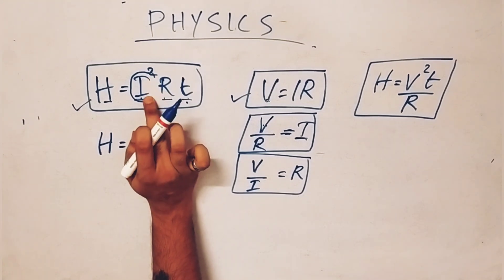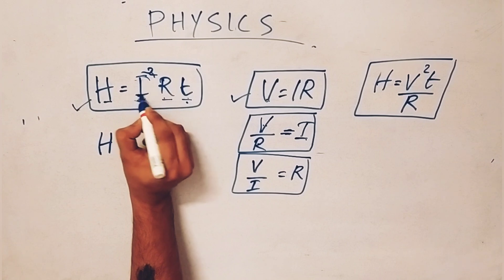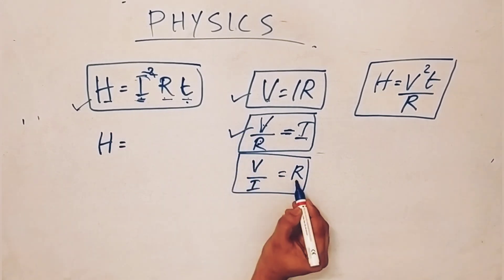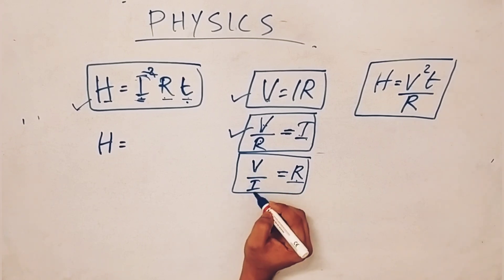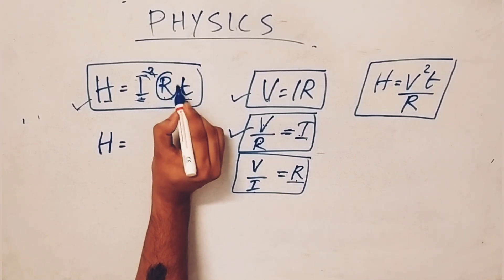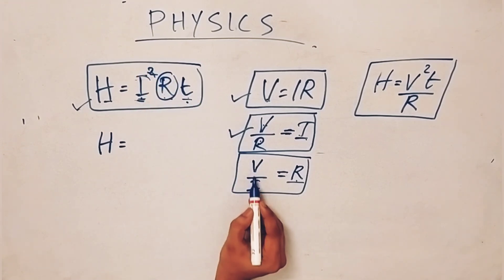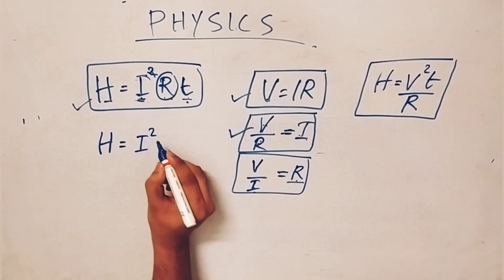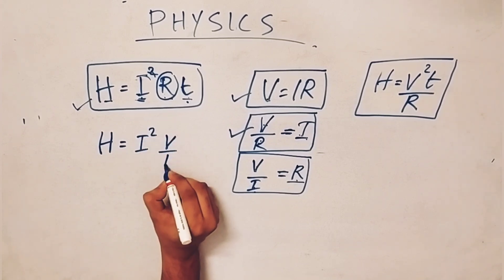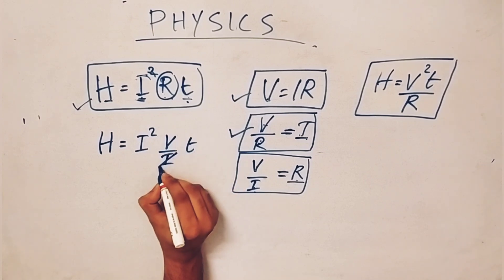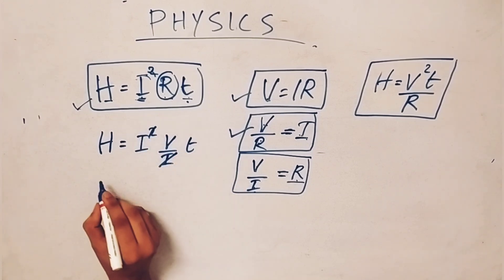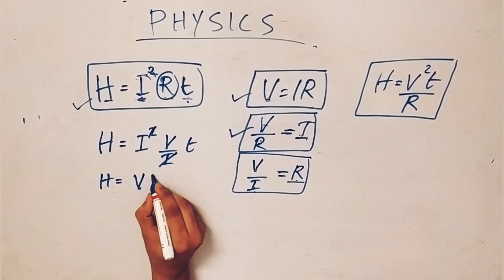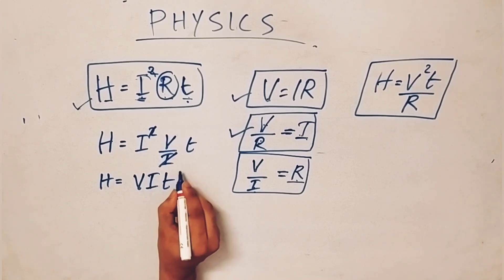We will substitute V by R for I in the formula. R is equal to V by I. R is substituted as V by I. H equals I squared times V by I times T. Cancelling I, H equals I times V times T — that is H equal to VIT.